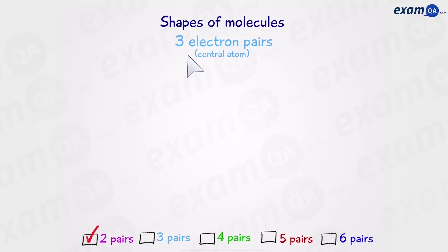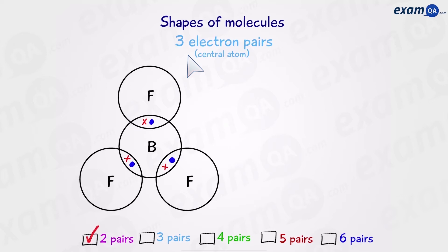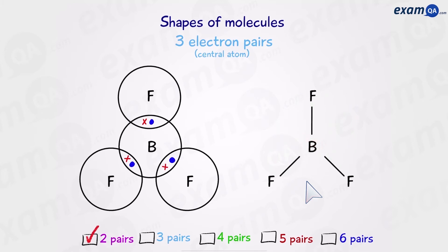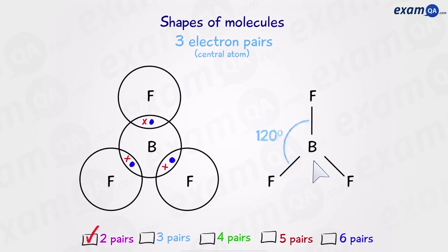Moving on to molecules with three electron pairs — here's an example of boron trifluoride, BF3. This molecule will look something like this, and we can draw the diagram accordingly. The angle between the bonded pairs of electrons is 120 degrees — if you take a full circle and divide it into three sections, you get 120 degrees. That is the bond angle in this molecule, and the name is trigonal planar.